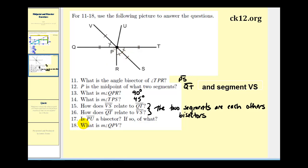Number 17, is segment PU a bisector? If so, of what? Here's segment PU, and notice how it does intersect segment QT and segment VS at the midpoint. So it is a bisector of those two segments.